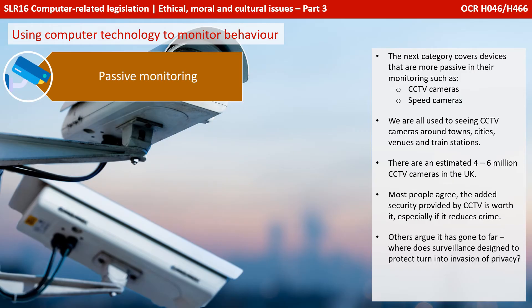The next category covers devices that are more passive in their monitoring, such as CCTV cameras and speed cameras. We're all used to seeing CCTV cameras around cities, venues and train stations. There are an estimated 4 to 6 million of them in the UK alone. Most people agree the added security provided by CCTV is worth it, especially if it reduces crime. Others argue it's gone too far — where does surveillance designed to protect turn into invasion of privacy?